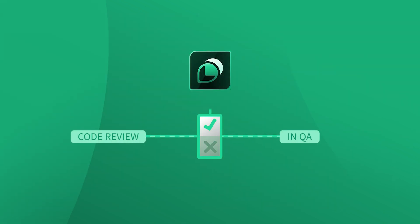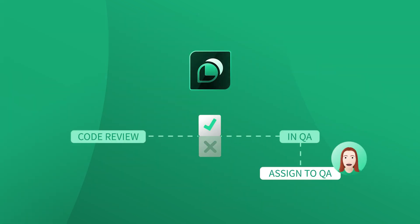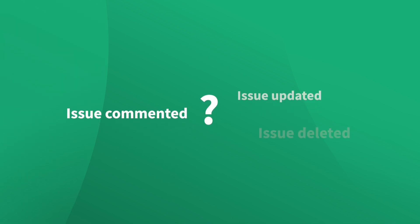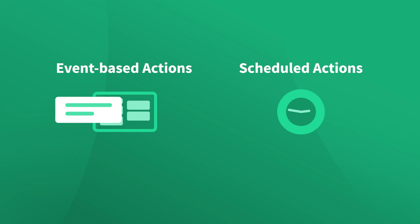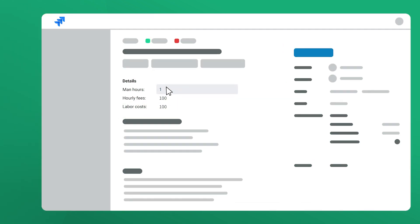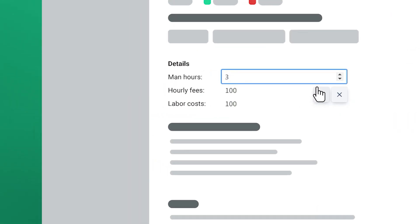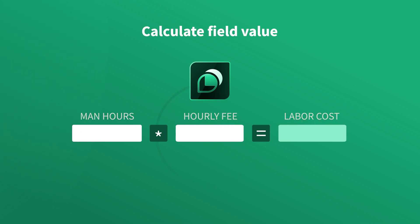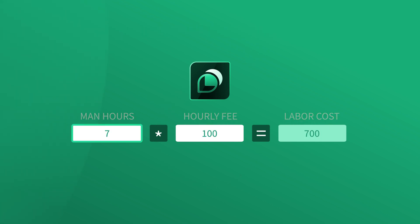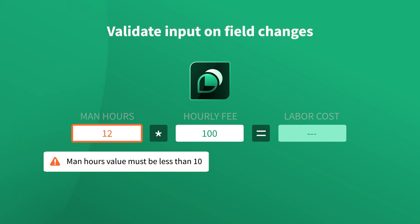Regular workflow automation runs on issue transitions. But what if something important happens in Jira without a transition taking place? JMWE helps you step outside of these boundaries and automate your processes based on a variety of changes. For example, let's say an engineer has updated a Jira issue field with the number of hours worked on a project. Not only can JMWE perform the necessary labor cost calculations, but it can also validate field value changes against requirements, completely automatically.